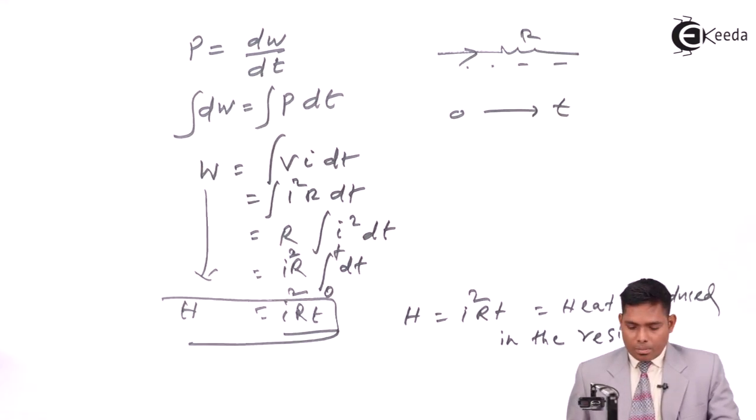This is what is known as the power in electrical circuits. So basically, power for a cell is VI. The power sent by the cell is VI, but power for a resistor is VI or I squared R or V squared by R.